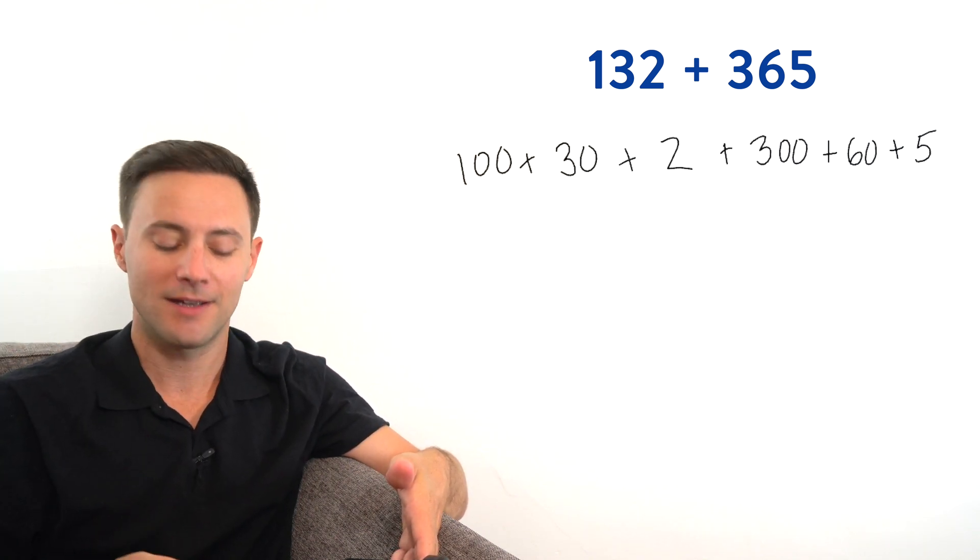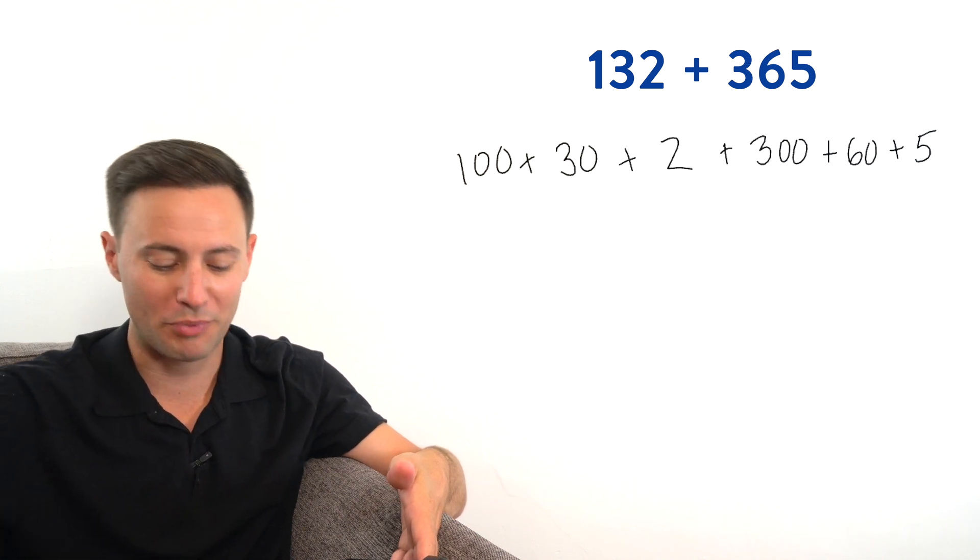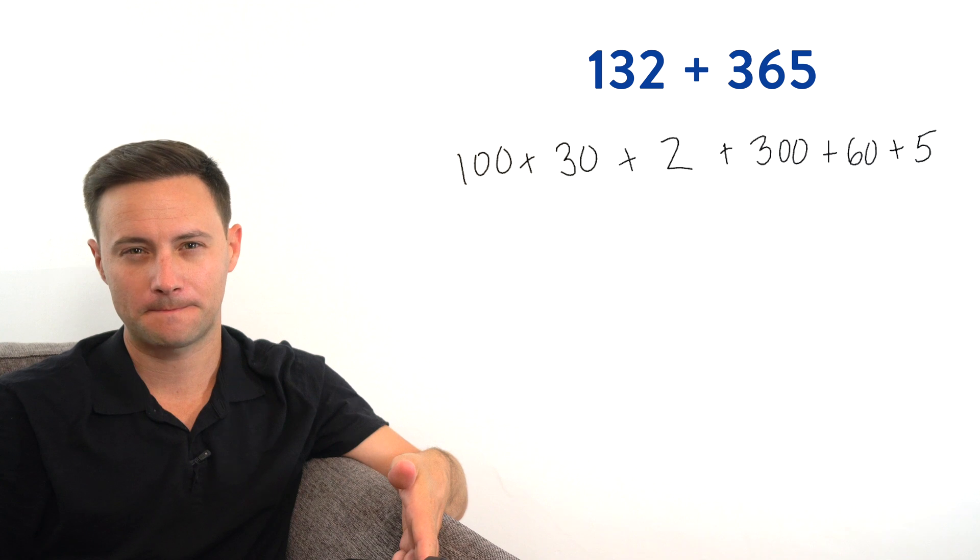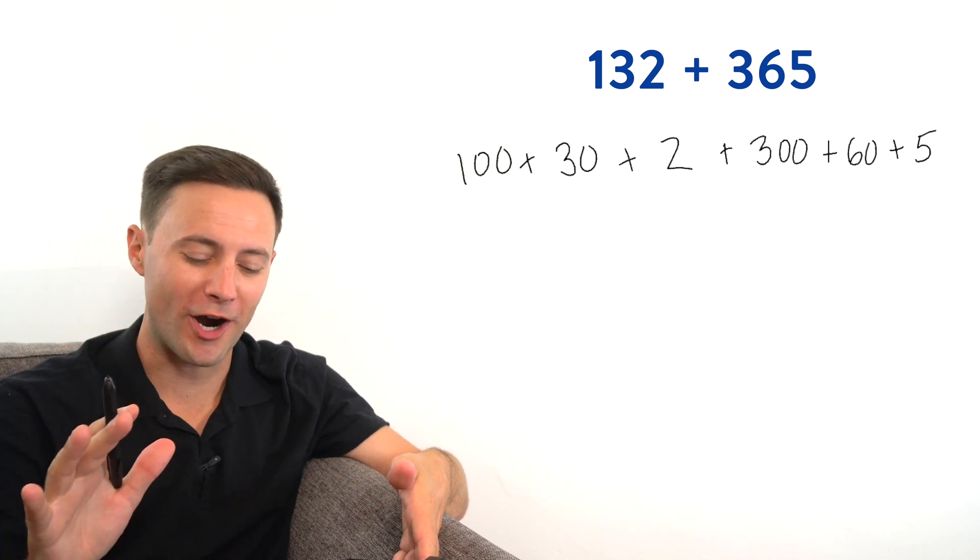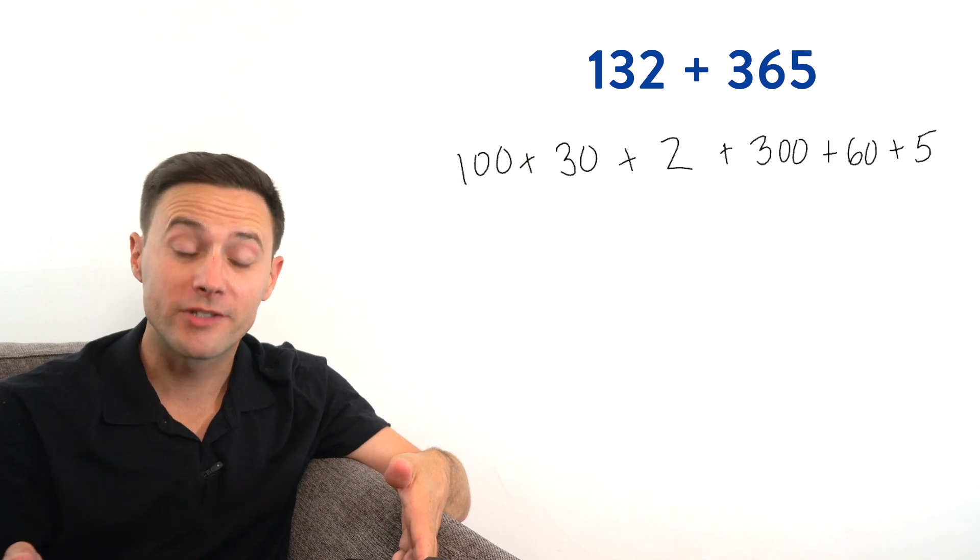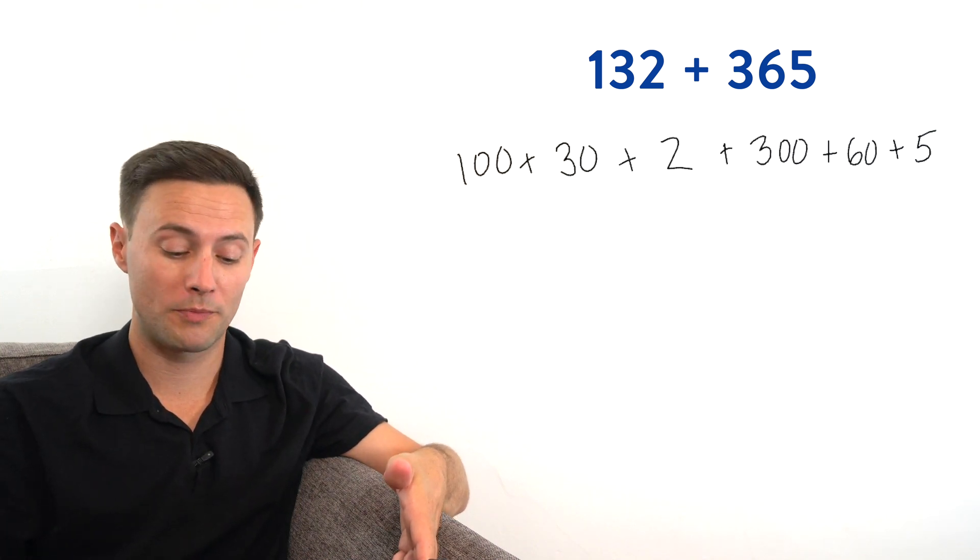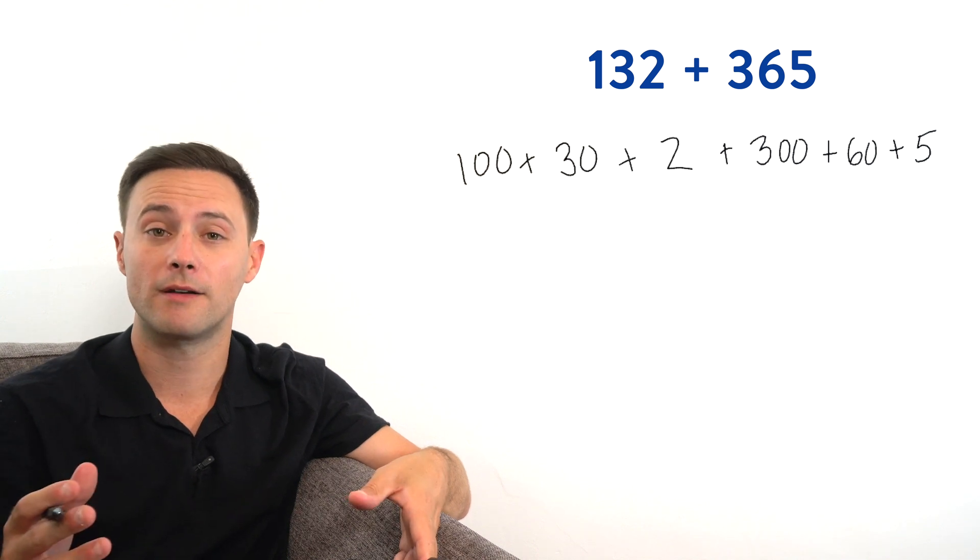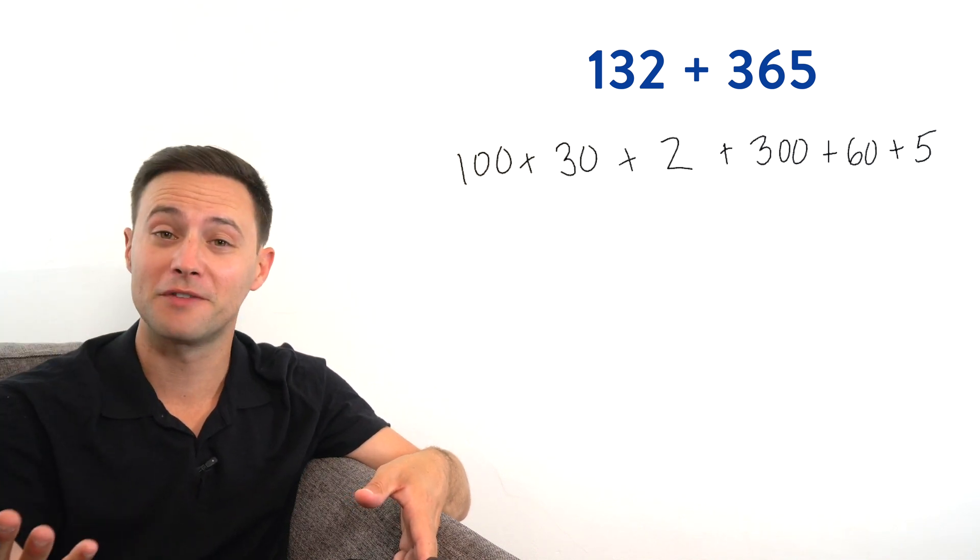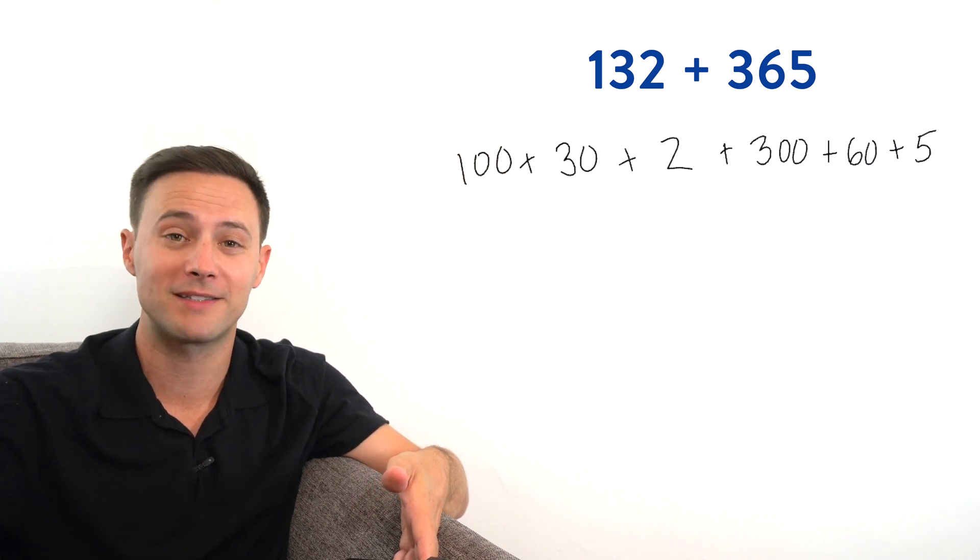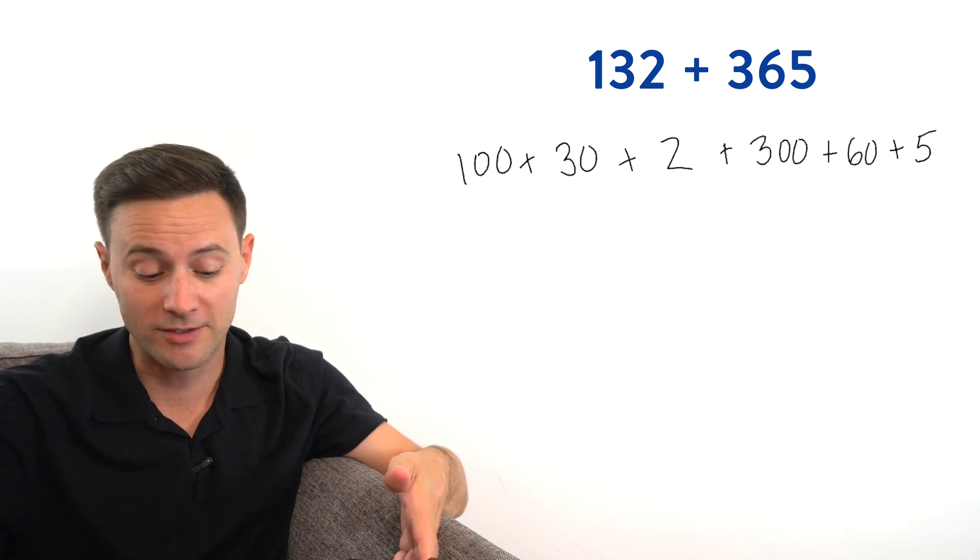Now, if you were going to add 100 plus 30 plus two plus 300 plus 60 plus five, how would you do it? Chances are, I'm guessing, you're probably going to group the hundreds together, you're probably going to group the tens together, then you're probably going to group the ones together. And that is the most efficient way to do it. That's exactly right. That would save the most amount of time and makes the most sense. And so let's do that.